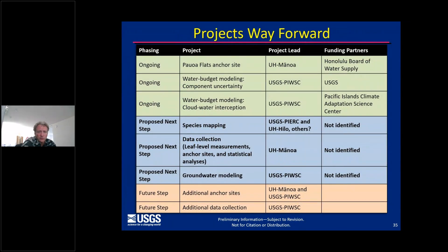Looking forward, this table identifies some of our ongoing projects and proposed next steps. Ongoing projects include a UH Manoa-led study at the Powwa Flats anchor site supported by the Honolulu Board of Water Supply. We are also beginning a water budget modeling effort to evaluate the sensitivity of the model to different inputs, funded by USGS. A third water budget modeling study looks at the importance of cloud water interception to mitigate the impacts of drought on groundwater recharge, supported by the Pacific Islands Climate Adaptation Science Center. Proposed next steps — for which we have not yet identified funding partners — include species mapping, data collection, groundwater modeling, and potentially additional continuous monitoring sites.